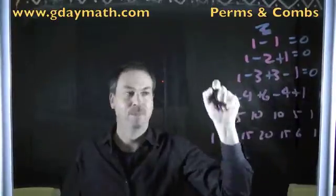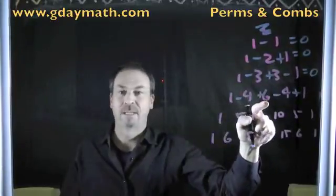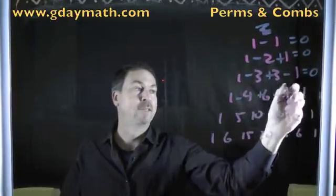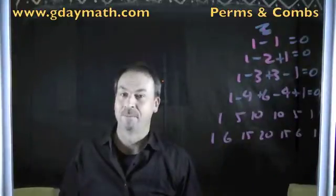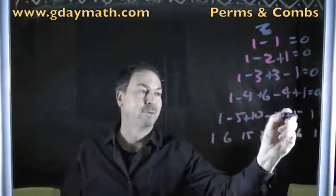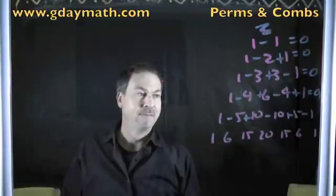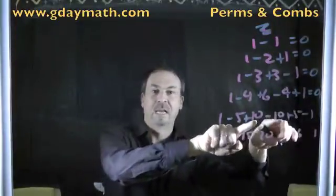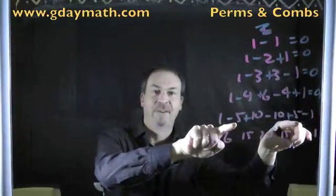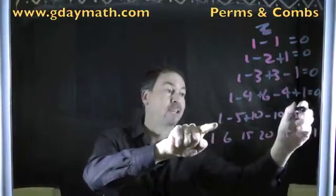Minus plus minus plus. Negative 3 plus 6 is 3. Take away 4 is negative 1. Plus 1 is 0. Minus plus minus plus minus. This one's actually kind of symmetrical. I can see you've got a plus 10 and a negative 10. That'd be 0. We've got a negative 5 and a 5. That's going to give me 0. And a 1 and a negative 1 is going to give me 0.